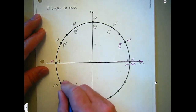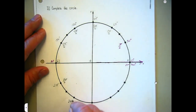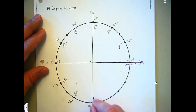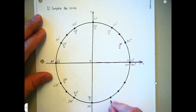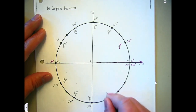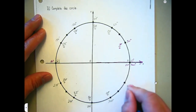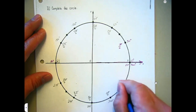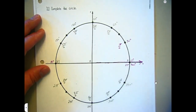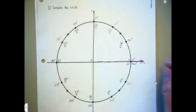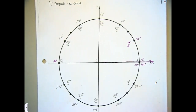Continuing to count every 30 degrees: 210 is 7π/6, 240 is 8π/6, 270 is 9π/6, 300 is 10π/6, 330 is 11π/6, and 360 is 12π/6, or 2π. As Rachel just pointed out, you should really be simplifying all of those. I waited until the end to simplify here.